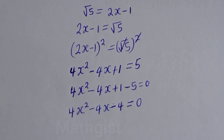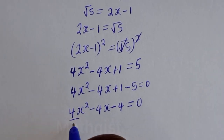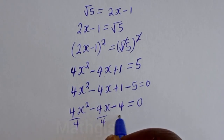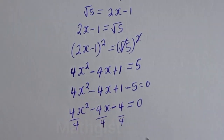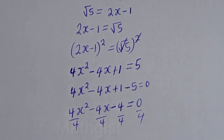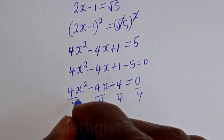Dividing everything by 4, we get x squared minus x minus 1 equals 0, which means x squared equals x plus 1.